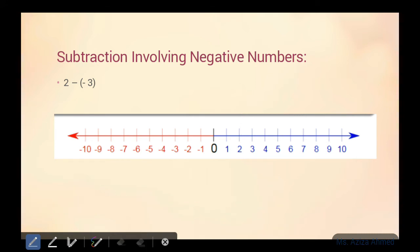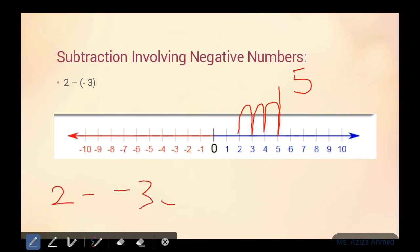But jab aap negative numbers mein subtraction kar rahe honge, toh aap backward nahi jayenge — aap forward jayenge, yaani aage ki taraf jayenge. Toh ye two hai humare paas. Ismein kitne minus karne thay? Three minus karne hain. But kyunki ye negative number hai, toh hum kya karenge? Aage move karenge: one, two, three. Kaunsa number aaya? Number five. Toh matlab hai jab aap two se minus karenge negative three ko, toh answer kya hoga? Five.